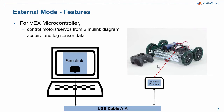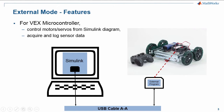In the case of the VEX microcontroller, what this communication really means is that transmitting data from your Simulink model is the ability to control the motor speeds and the servo angles. And then the receiving or acquiring of data is nothing but the sensor data. If you had sensors on your VEX robot, you should be able to acquire and log the sensor data coming from your external model back into your Simulink model on your computer.